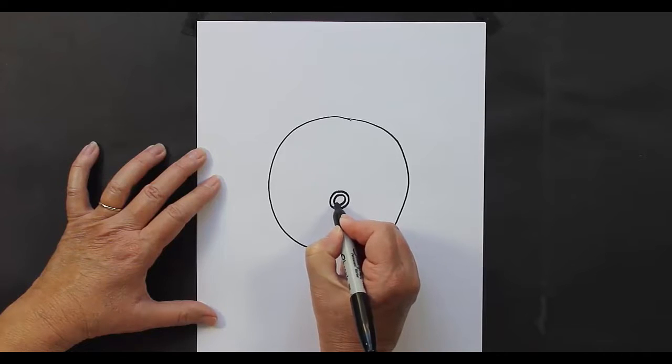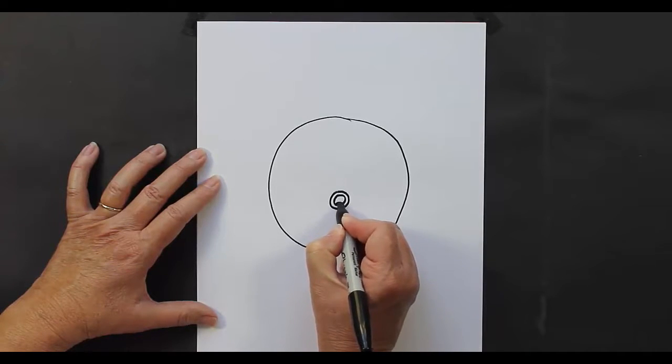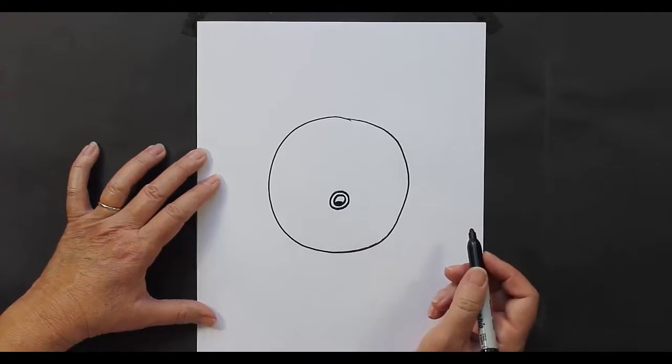And then down at the bottom of that smaller circle, you're going to put a little area down here. That's going to be his tongue.